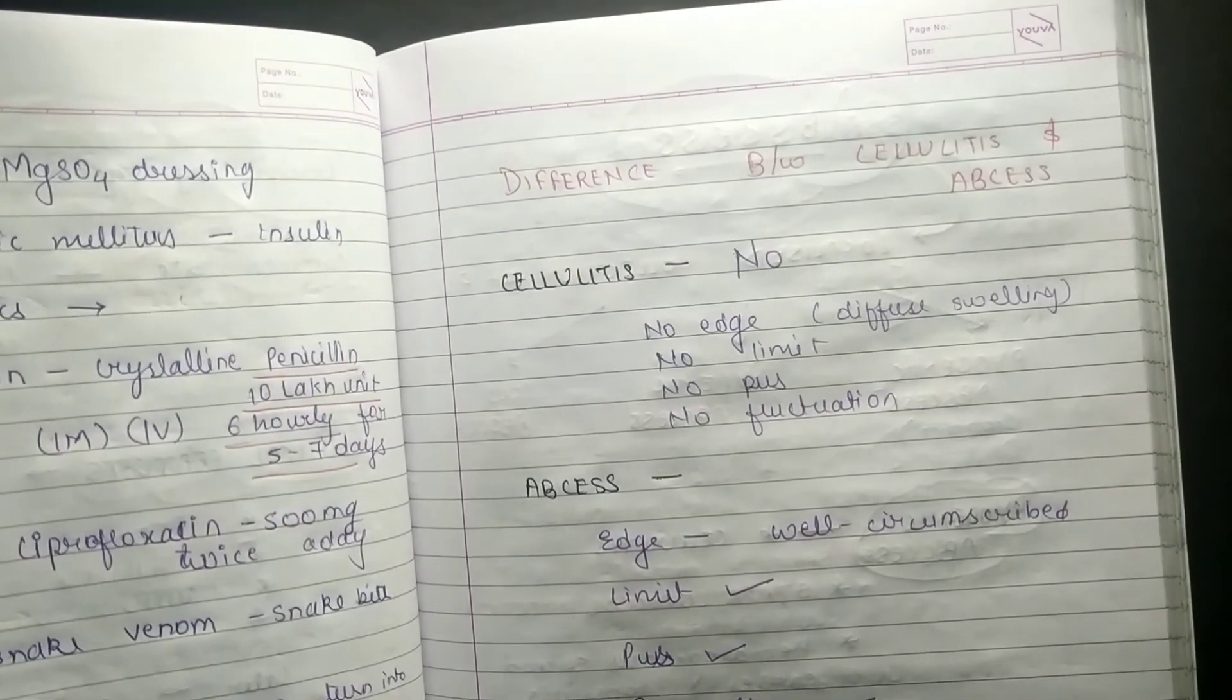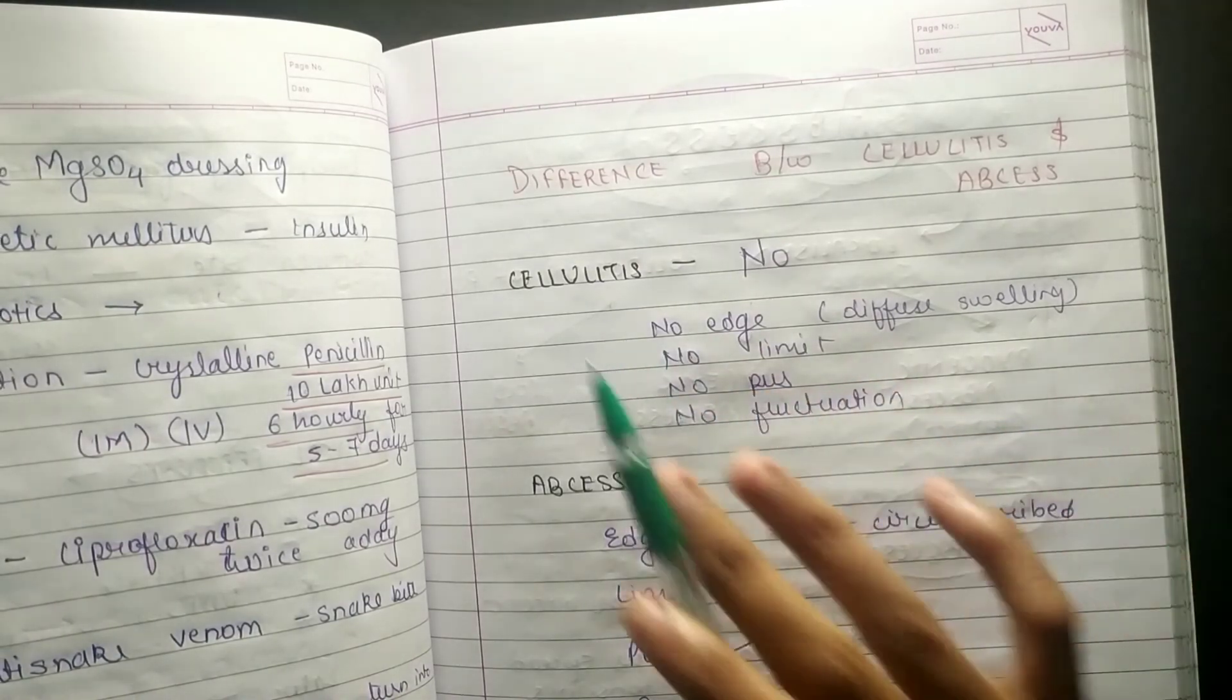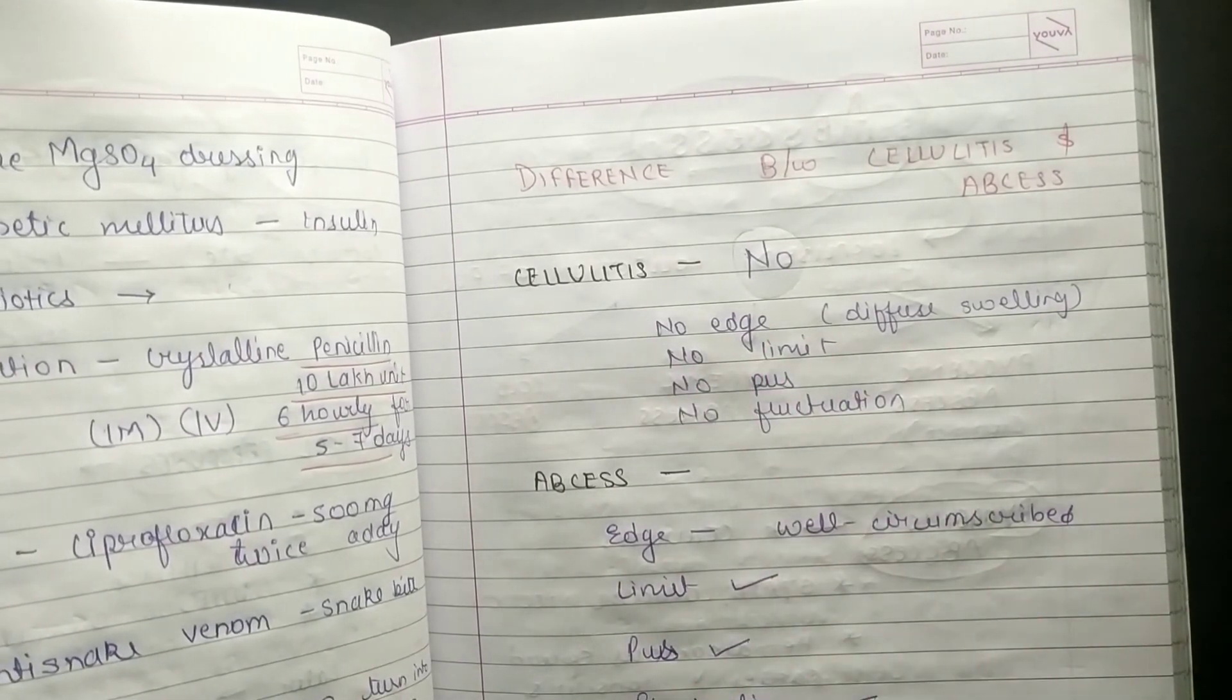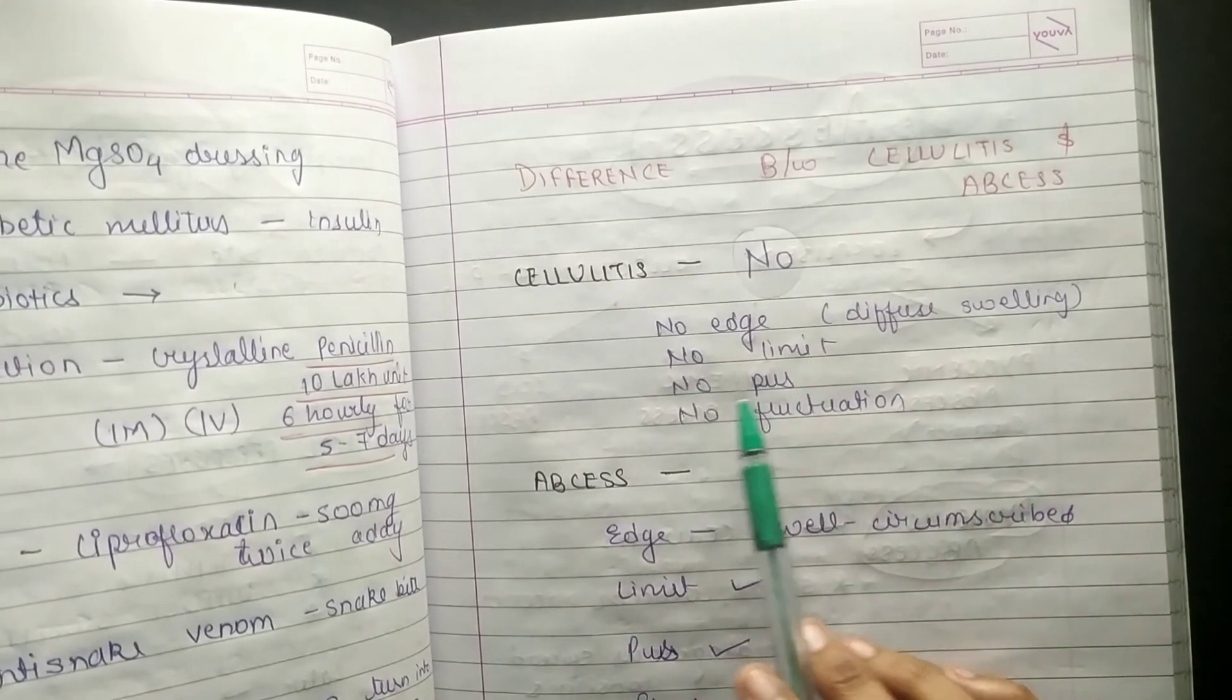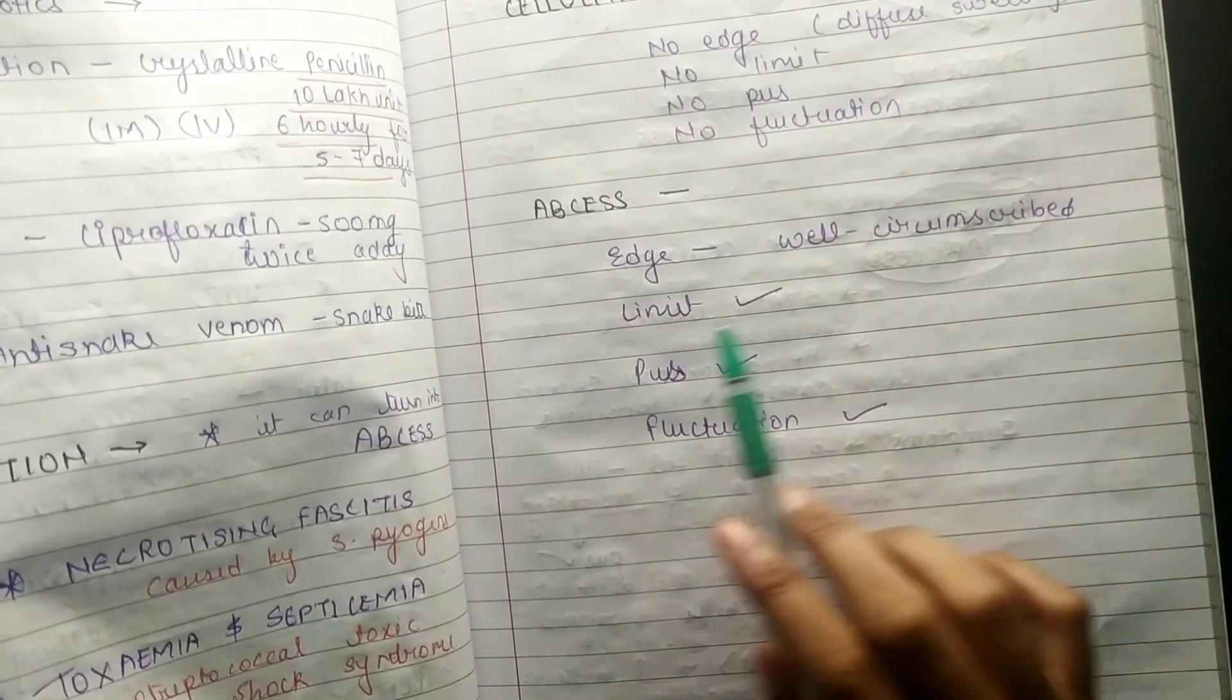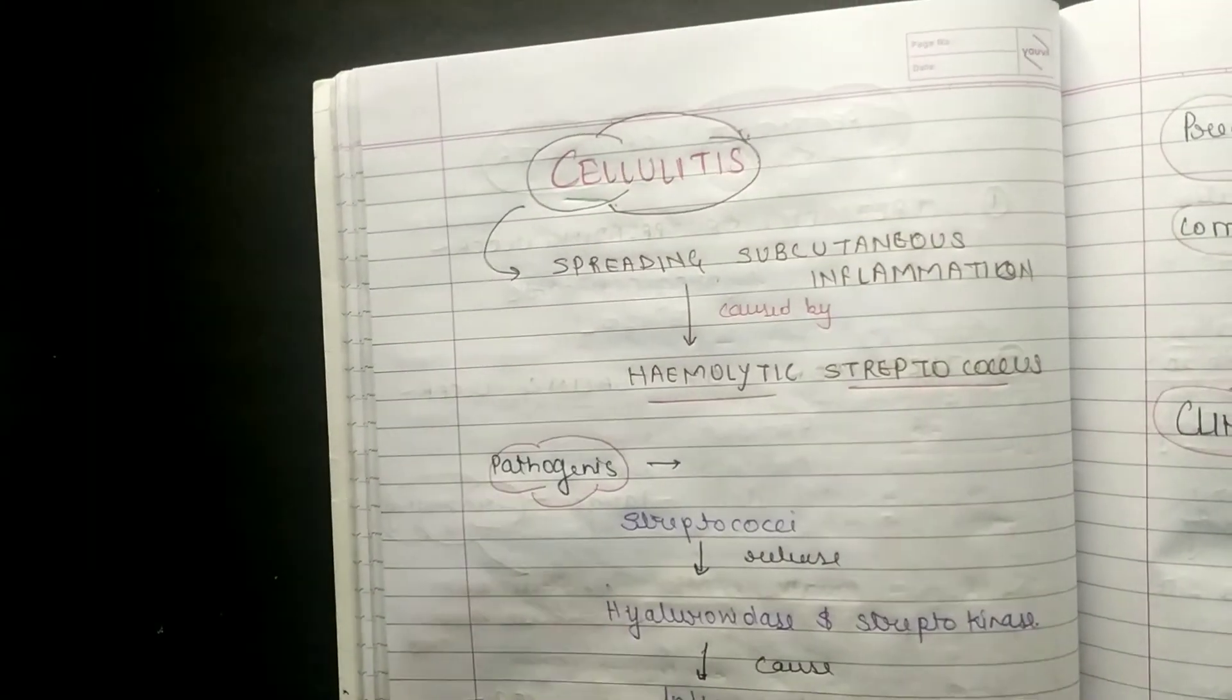Now coming to the difference between cellulitis and abscess. In cellulitis there is no edge, no limit, no pus, no fluctuation. But in abscess, the edge is well circumscribed, limit is there, pus is there, and fluctuation is there. This is all about cellulitis.